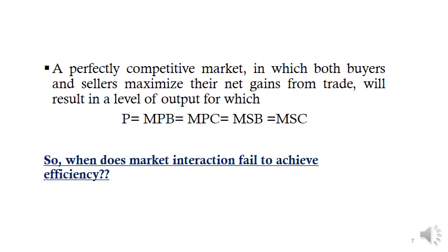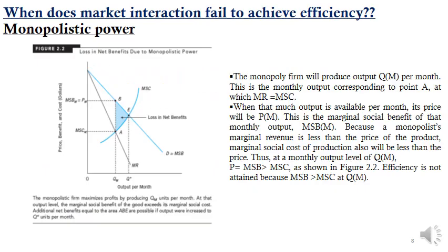Inefficiency in competitive markets occurs when prices do not fully reflect marginal social benefits and costs of output, meaning other mechanisms beyond markets are needed to make social benefits of certain goods available. The failure of markets to provide certain goods such as national defense and environmental protection gives rise to demand for government production and regulation.